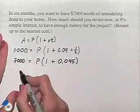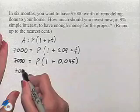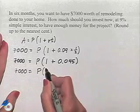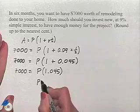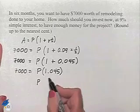We're then going to add this amount inside the parentheses. To find P, we'll divide both sides of the equation by 1.045.